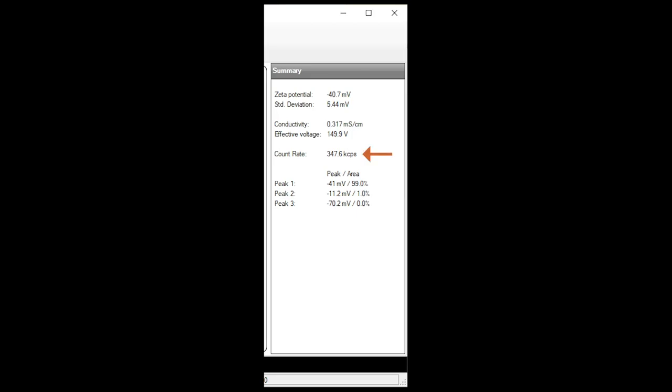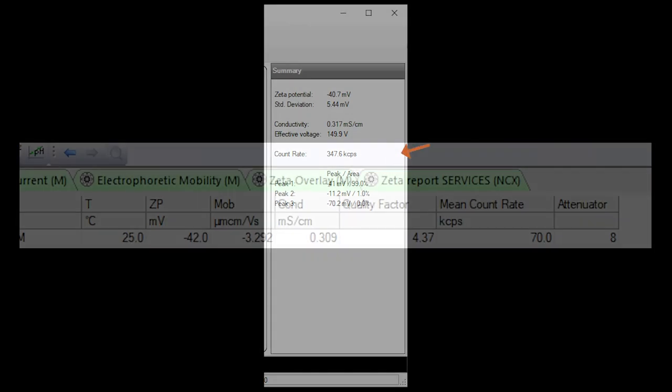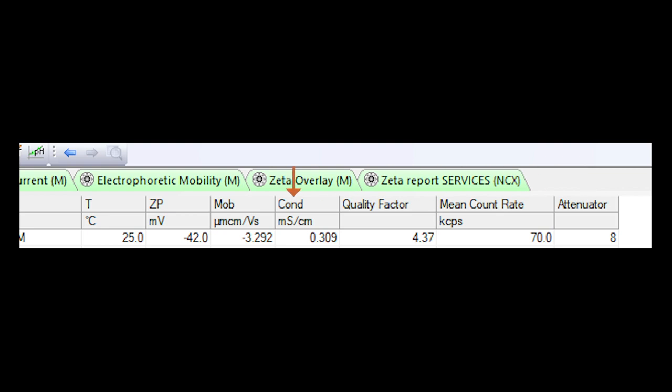While the sample is measuring, pay attention to the signal or count rate, attenuator setting, conductivity, and quality guidance. We'll cover this and more in part 3.